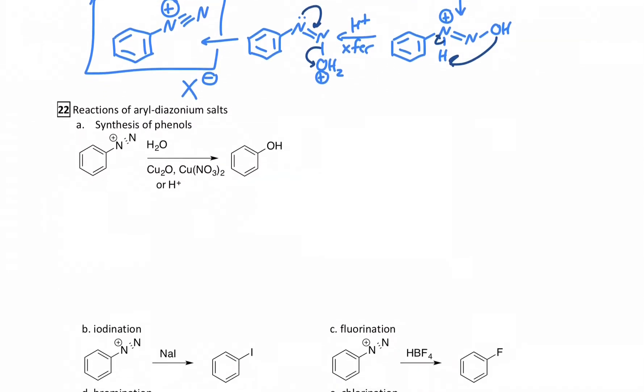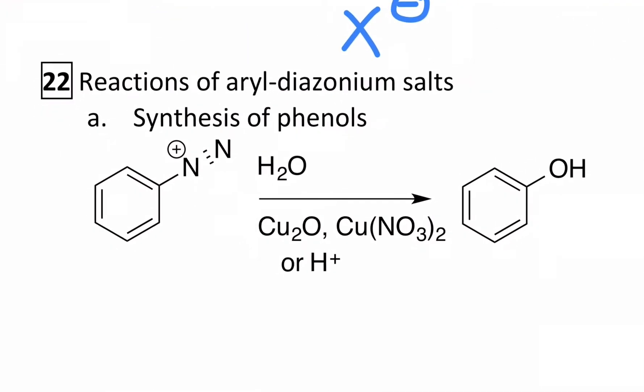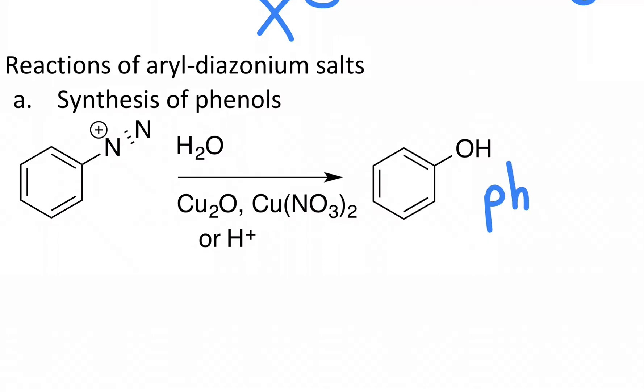Now we can do substitutions on the diazonium. The whole point is we can turn that diazo group into something else. One of the most useful things is we can make a phenol out of this. You can substitute the N2 group for an OH. This is the only way you know how to make a phenol, for now. This actually happens with acidic water, not just H2O, but H2O under acidic conditions.